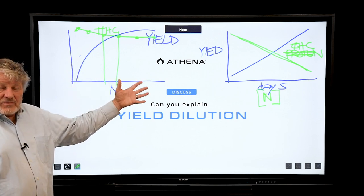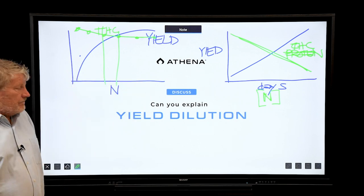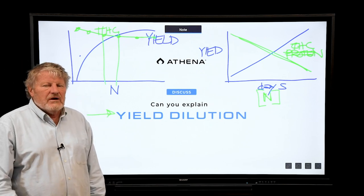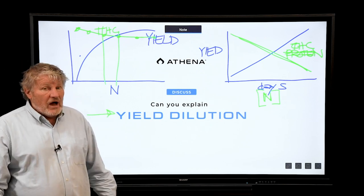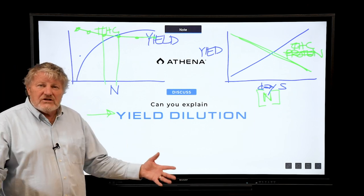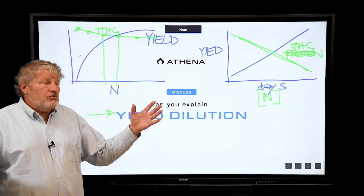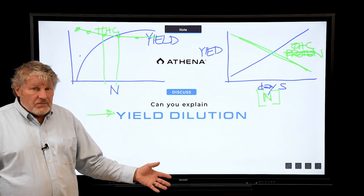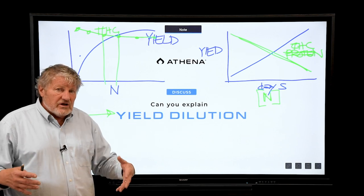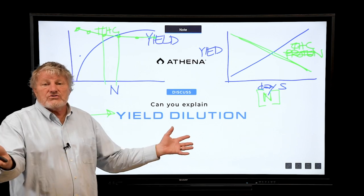But this concept of yield dilution has been around forever, and this is really why we do precision stress of plants to concentrate the valuable things. We do it in food crops all the time. We have a big project around here to precision stress fruit trees to make higher sugars in the fruit.